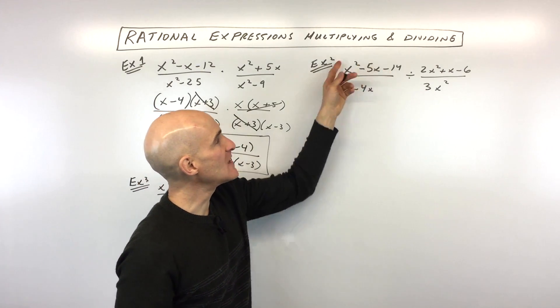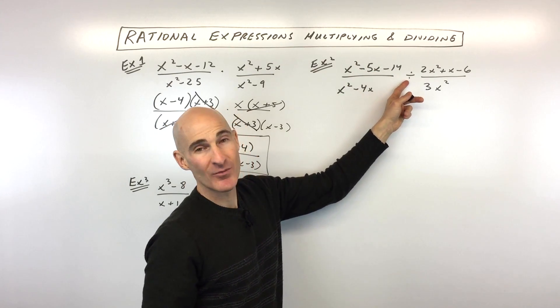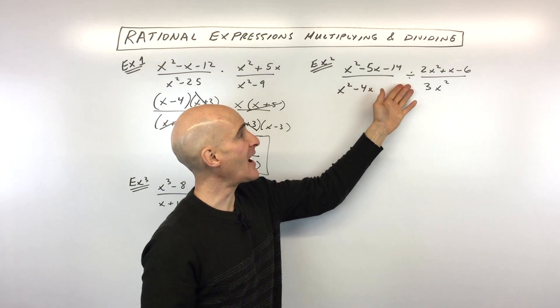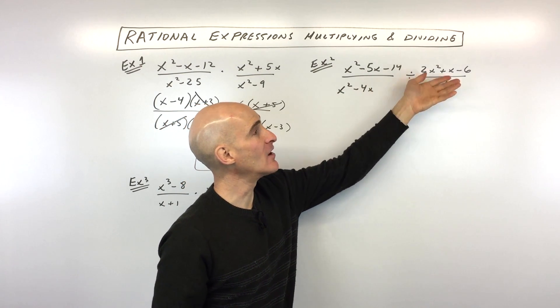And what that means is, you keep the first fraction the same, you change this to multiplication, and you flip the second fraction. The other way that students oftentimes remember it is dividing is like multiplying by the reciprocal.